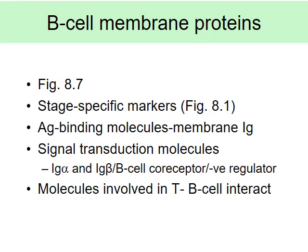We'll continue with the B cells. So far, we've been talking about markers that are expressed on the surface. Remember that most of the immune system deals with receptors expressed on the surface, because when cells talk to each other, they see whatever is exposed. So it needs to bind and dock before the signaling pathway goes on. Let's talk about those specific membrane proteins.